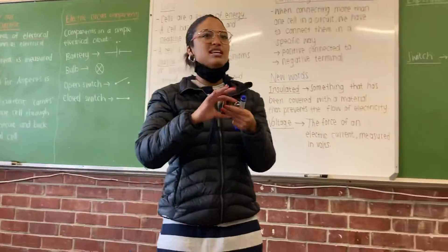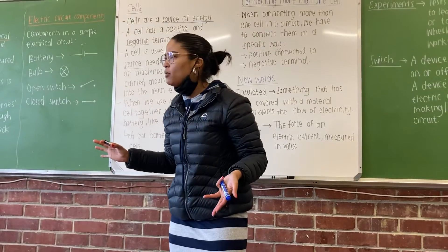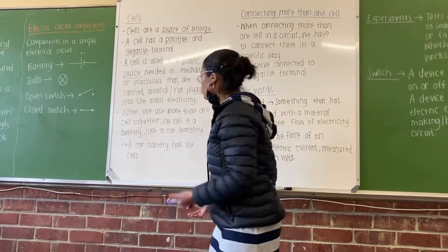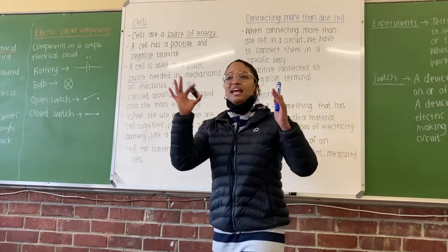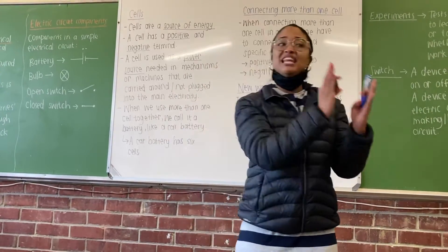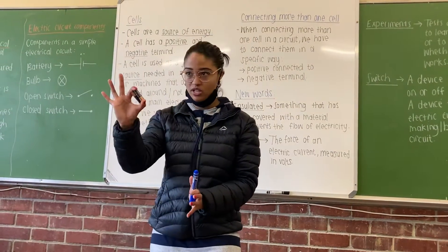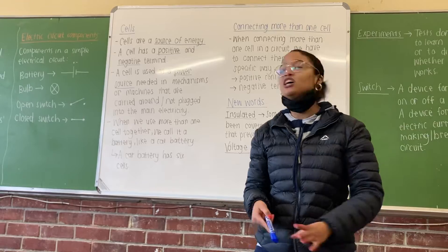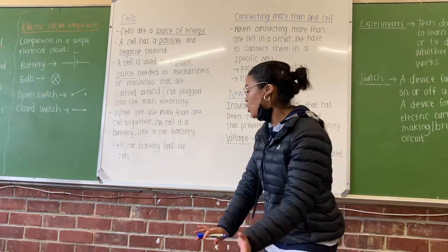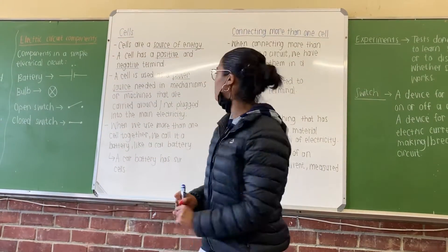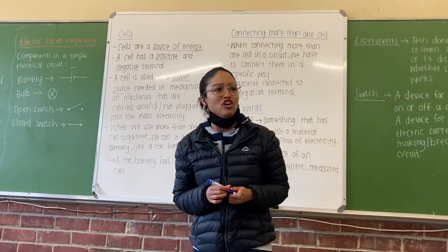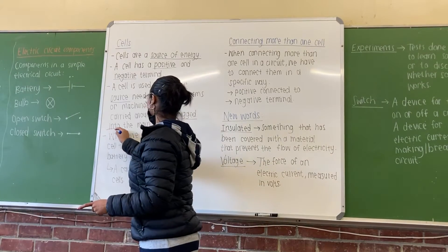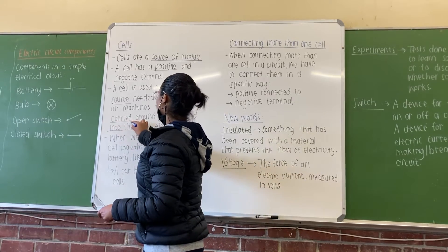Batteries are put into things that we carry around. A phone has a battery — it doesn't look like this, but it has a battery, because we carry it around and it's not plugged into electricity. Anything wireless, anything that we don't plug in, usually uses a battery. If we look at the clock there at the back — how does that clock work? With a battery. Because it's not plugged into the main electricity and it can be carried around.